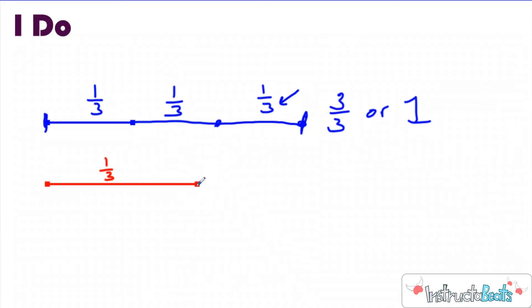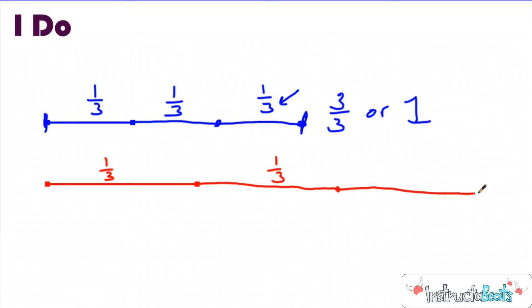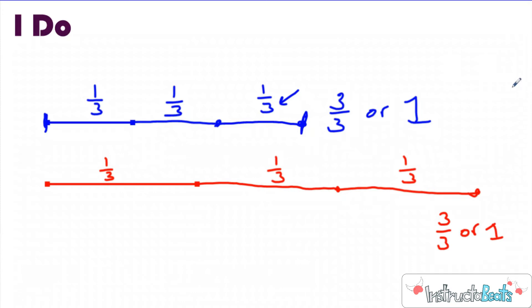That gave me a total of three thirds, or one whole string cheese. You should already be thinking: the red string cheese is probably going to be longer because the one third was way longer than the blue one third. So I'm going to draw out the whole red string cheese now. If this one third was that size, the next one third needs to be that size too, and my denominator is three, so I need three total pieces. The red string cheese was way longer than the blue string cheese, and this equals three thirds or one whole.